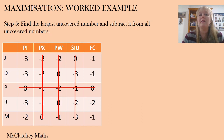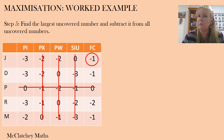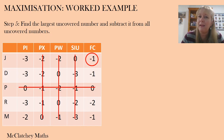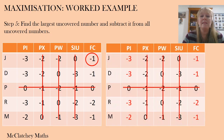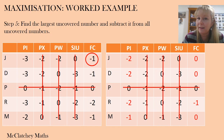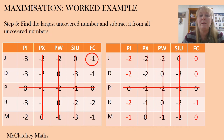The next step is to find the largest uncovered number and subtract it from all uncovered numbers. Looking through our matrix, the largest uncovered number is negative one. You might think three is bigger than one, but remember: negative one is bigger than negative three. Be very careful with negative numbers here — don't rush. When we subtract negative one from the uncovered values, subtracting a negative turns into addition. For example, in the top corner: negative three take away negative one becomes negative three plus one, giving us negative two for Jim with that first business.